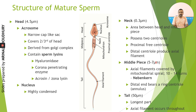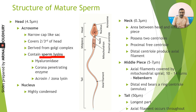The structure of the mature sperm is important from an exam point of view. It mainly has three parts: head, middle piece, and tail. The head is around 4.5 micrometers in length and has two main parts. One is the acrosome — a narrow cap-like sac at the tip, derived from the Golgi complex, taking up around two-thirds of the head area. It contains important hydrolytic enzymes known as sperm lysins: hyaluronidase, corona penetrating enzyme, and acrosin or zonalysine. The other part is the highly condensed nucleus.